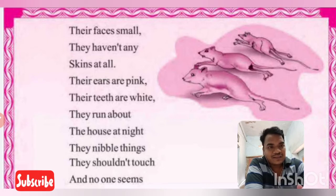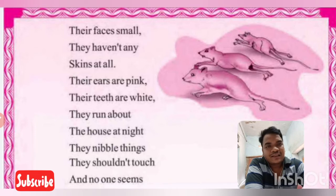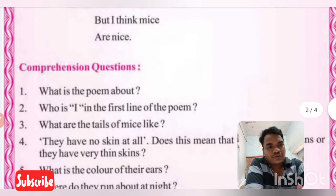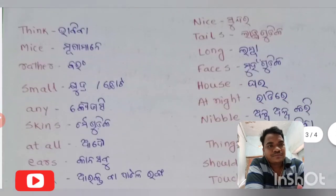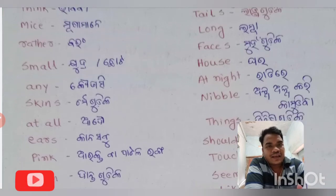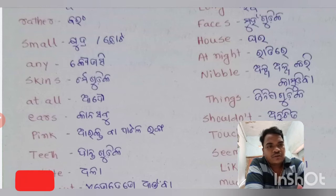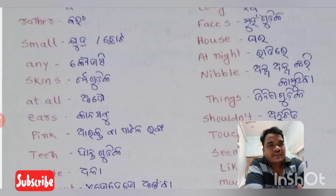Then come to the next line: 'Their ears are pink, their teeth are white, they run about the house at night, they nibble things they shouldn't touch, and no one seems to like them much.' Some difficult words: 'any' — A-N-Y — means anything. 'House' — we call it our home. 'Night' — N-I-G-H-T — means nighttime.